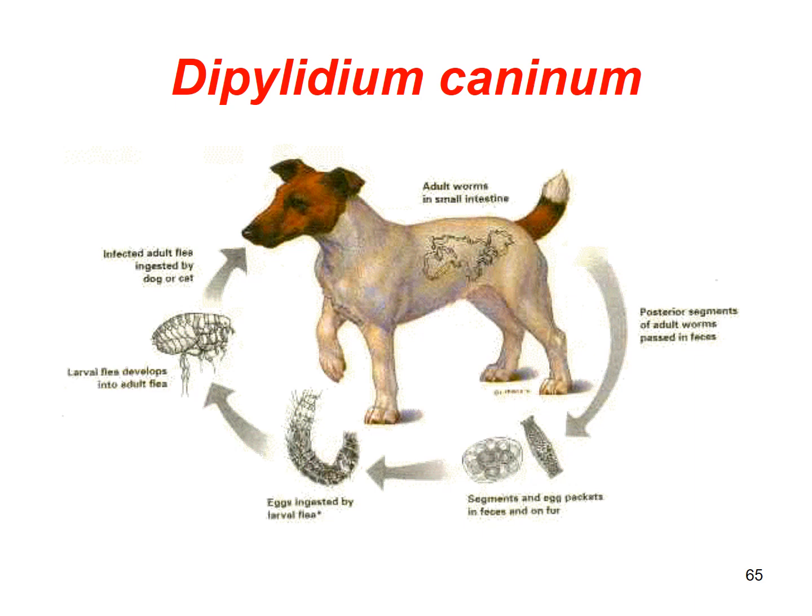Dipylidium caninum is the dog tapeworm. In the life cycle, eggs are shed in feces and ingested by fleas — flea larvae eat organic material including fecal material containing eggs. The larvae develop into adult fleas living on your dog. If your dog chews at itself because it's itchy from fleas and accidentally eats a flea that has the tapeworm larvae inside, that's how they can infect themselves. If you see rice-like segments, not only should you deworm your dog but also check for fleas, because that's typically how they've gotten this tapeworm.